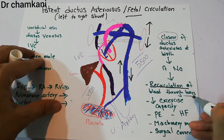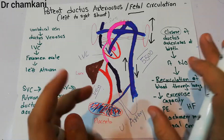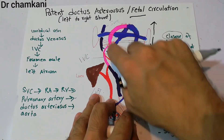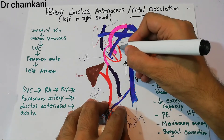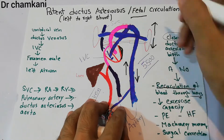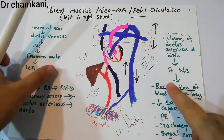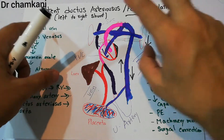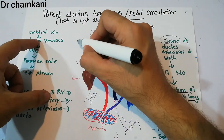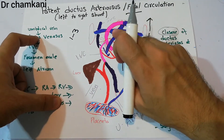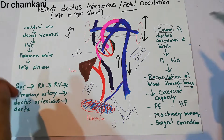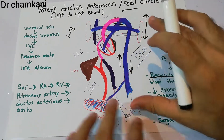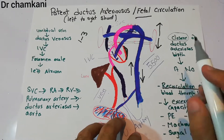This recirculation decreases exercise capacity. Although the blood keeps getting oxygenated, the left ventricle has to work excessively because blood is constantly recirculating through the lungs. As a result, the left ventricle hypertrophies — its size increases. The increased blood flow through the lungs also leads to pulmonary edema and can ultimately lead to heart failure.